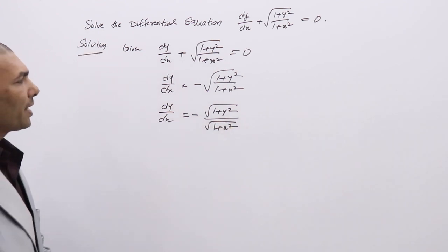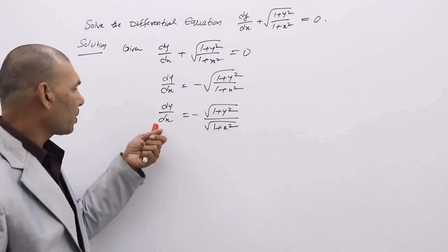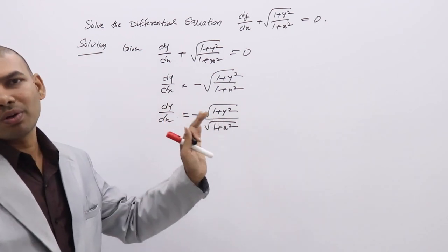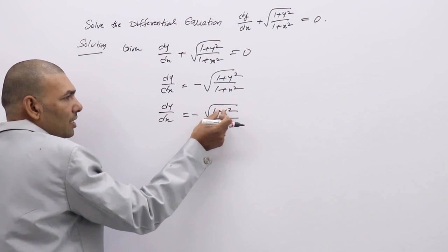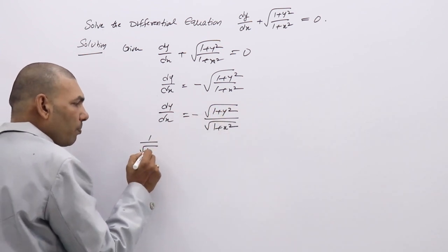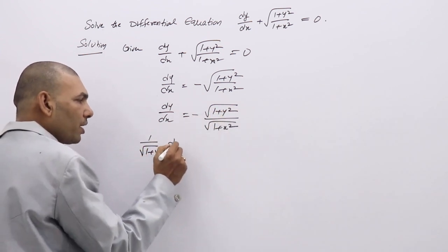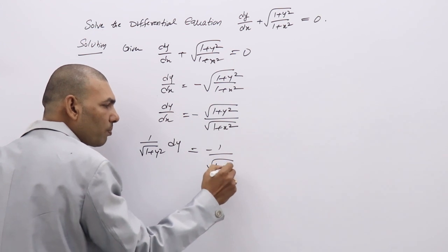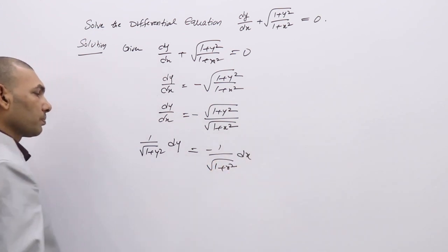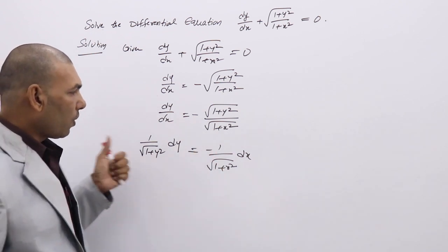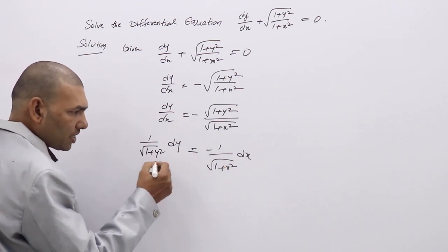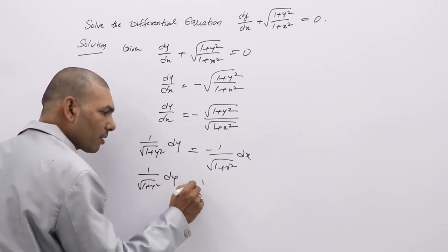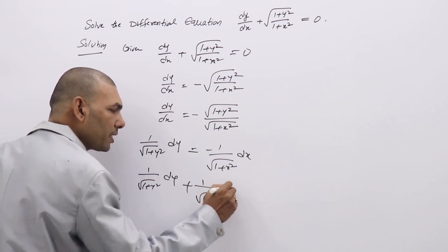Now you can get a clear idea. We can take √(1+y²) to one side and dx to the other side, so y terms will be on one side and x terms on the other. This gives us: (1/√(1+y²)) dy = −(1/√(1+x²)) dx. If you want, you can take the RHS term to the left side: (1/√(1+y²)) dy + (1/√(1+x²)) dx = 0.